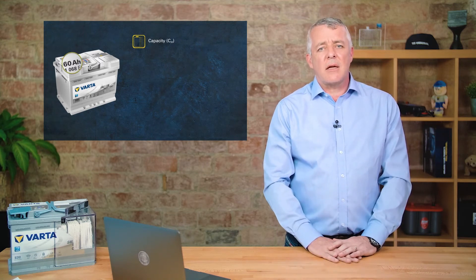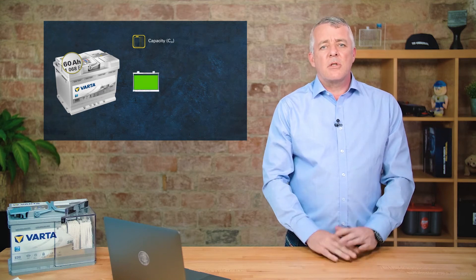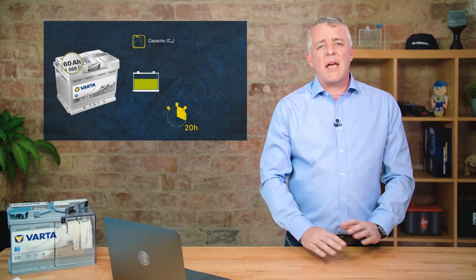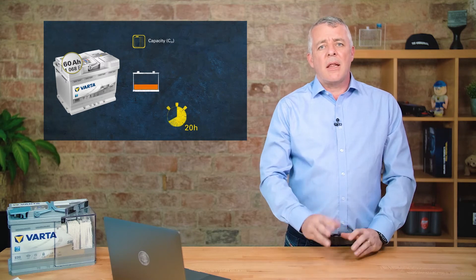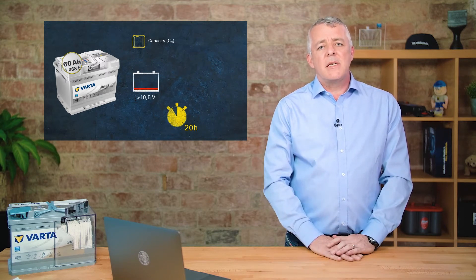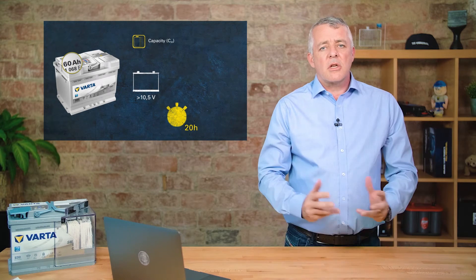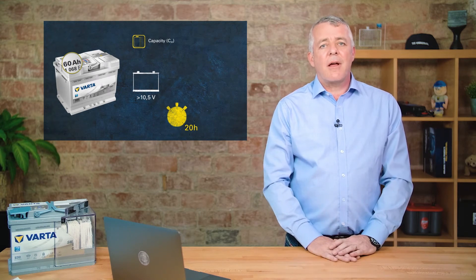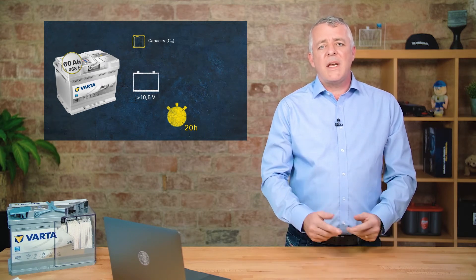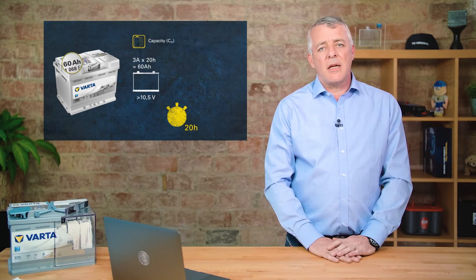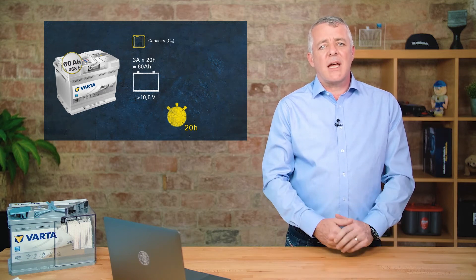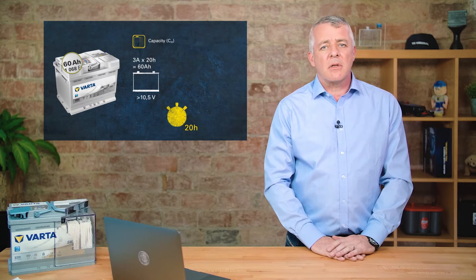So how do they test that according to EN? The test is carried out over 20 hours and a load is put on the battery. The battery must be above 10.5 volts. To get that result for a 60 amp hour battery, we need to put a 3 amp drain on it. So 3 amps over 20 hours equals a 60 amp hour battery.